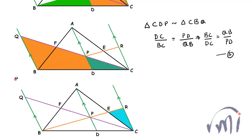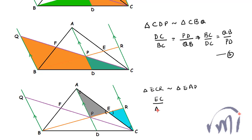Now I will compare the triangles to get an equation in terms of CE and EA. This angle equals this angle (vertically opposite angles), and this angle equals this angle (alternate angles between two parallel lines), so the remaining angles are also equal and triangle ECR is similar to triangle EAB. Therefore EC divided by AE equals CR divided by AB — call this equation 4.